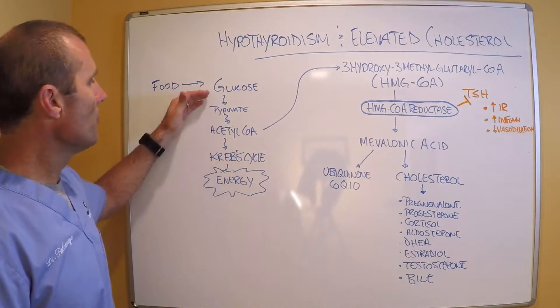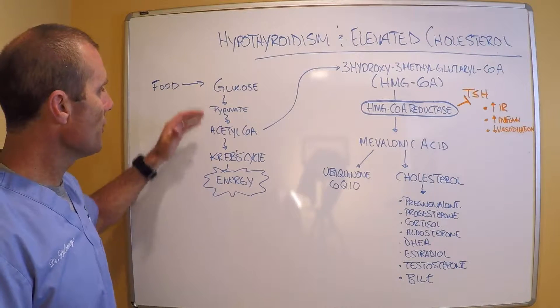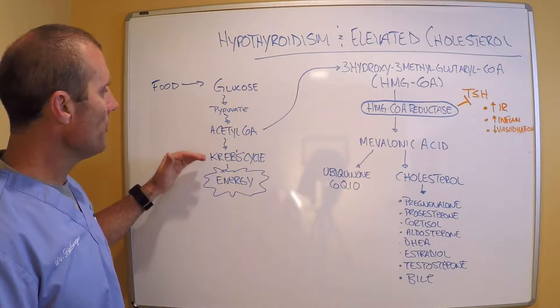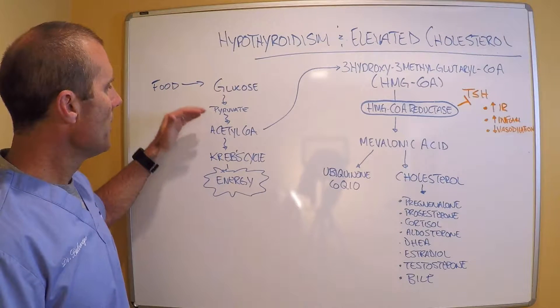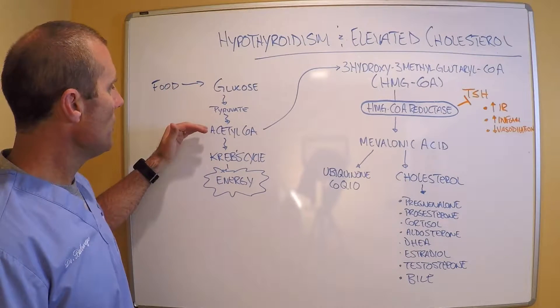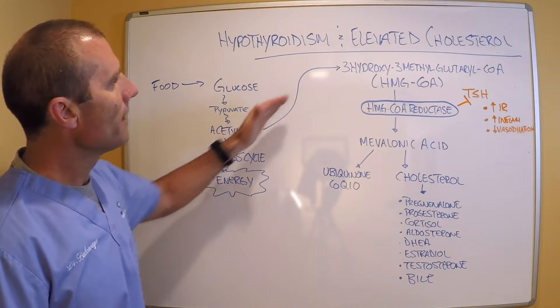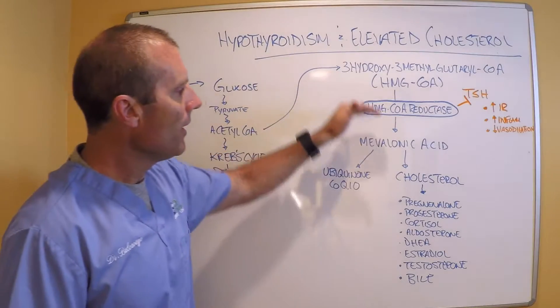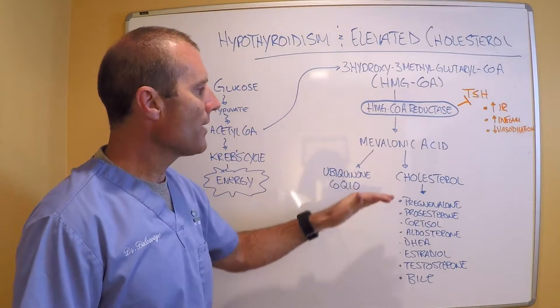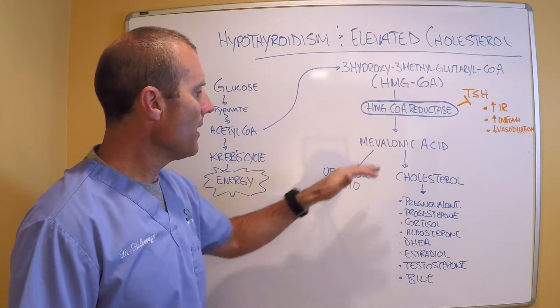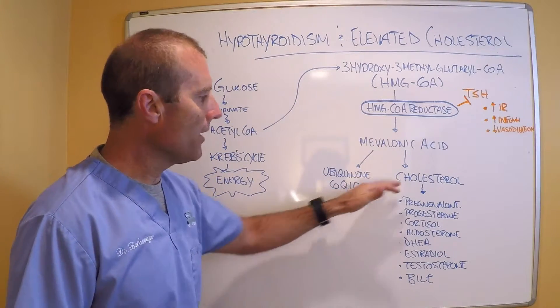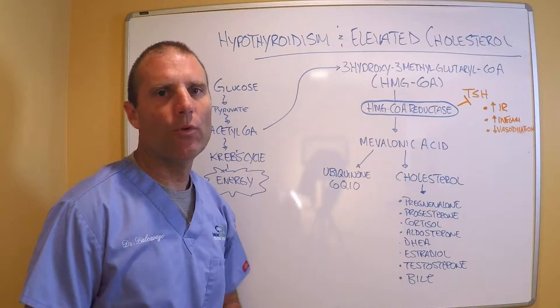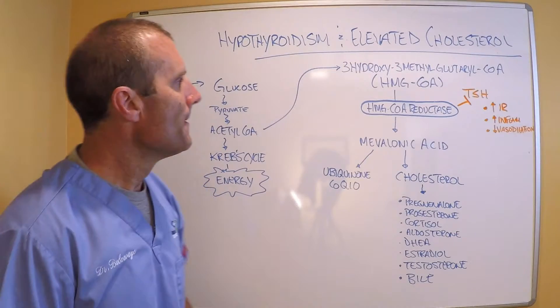The reason this is important is because HMG-CoA is what is used to make cholesterol. So if you're consuming lots of glucose and you're not able to use that glucose, acetyl-CoA can spill over and it goes through a natural process of making CoQ10, cholesterol, and a whole bunch of different hormones.